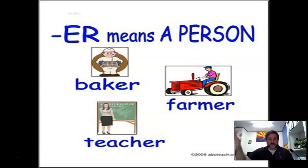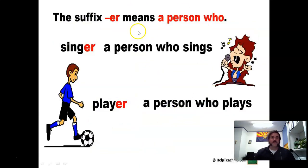It's a person who does whatever the root word is. In this case bake, farm, and teach. You add er, it's the person who bakes, the person who farms, the person who teaches, right? Same with this. A singer is a person who sings. A player, hey, they stole mine. That's okay. A person who plays, right? That's all er means.